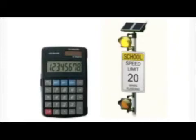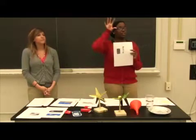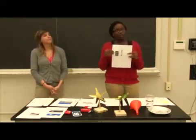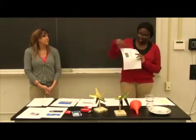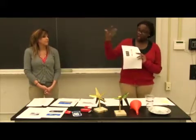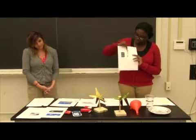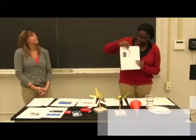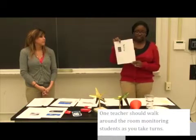This one on the right is a calculator that uses solar energy from your classroom light. So if we turned off the light, our calculator wouldn't work. And if we turned on the light, our calculator would work without a battery. And this one is very familiar for school zones — it is operated by the energy from the sun as well.